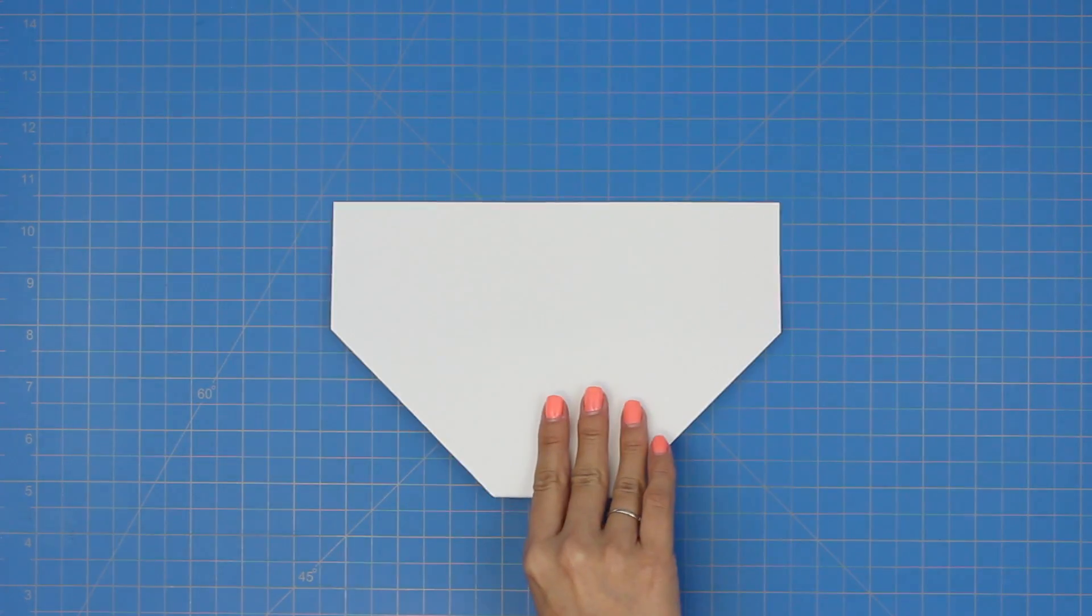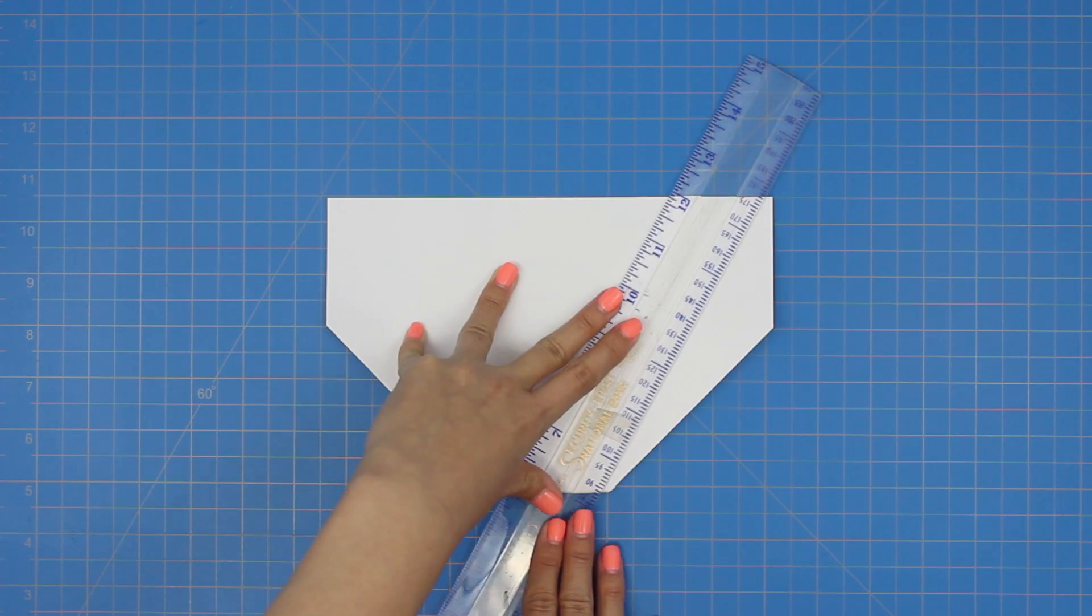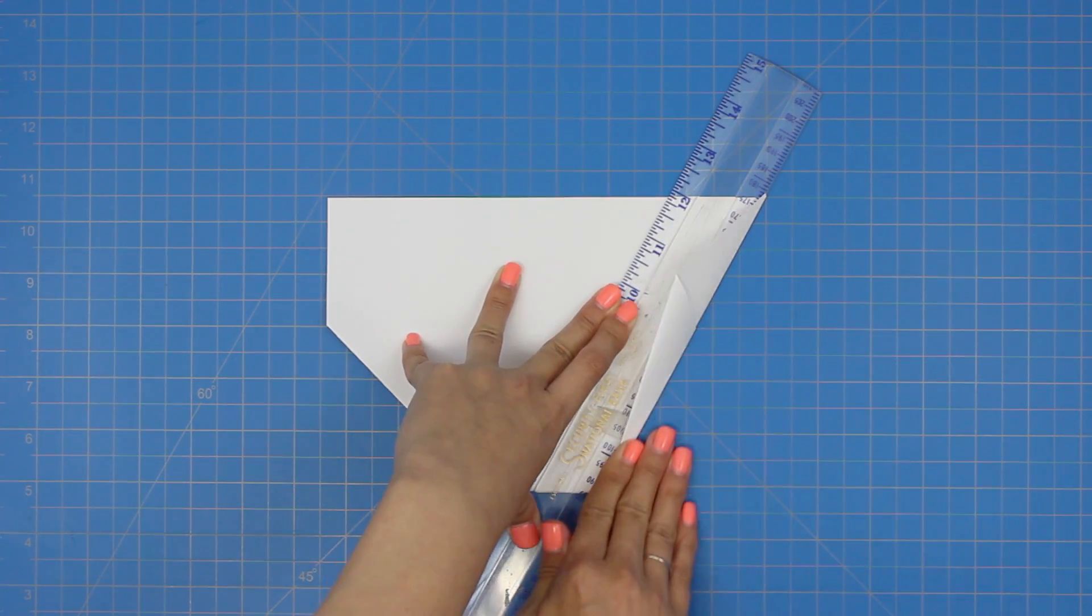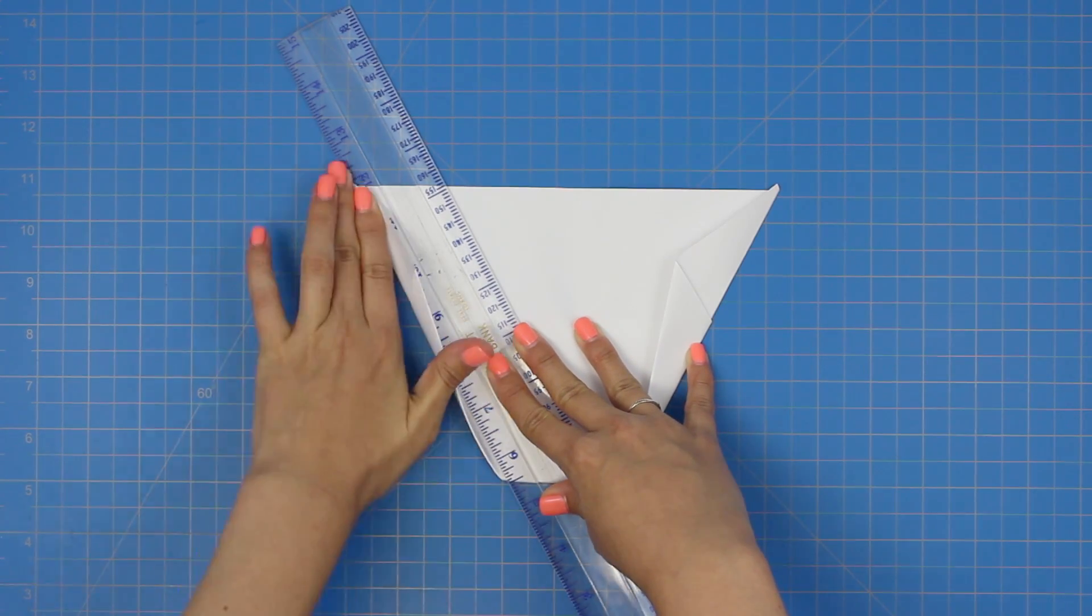Flip the plane over and grab a ruler for the next step. Fold in the right side at the top and bottom peak like this and repeat with the other side.